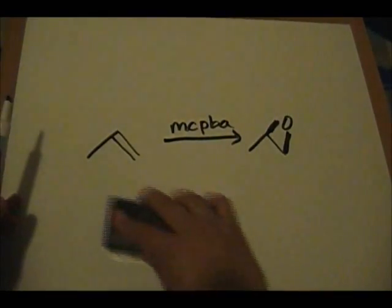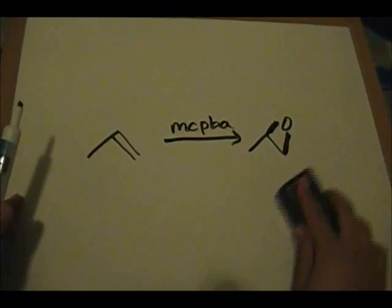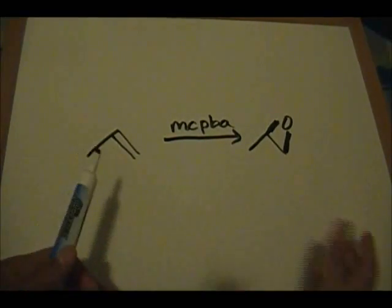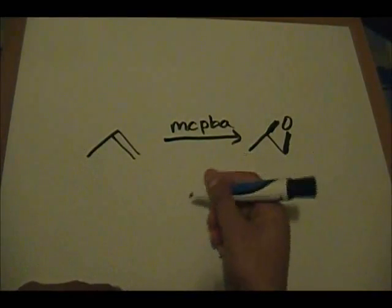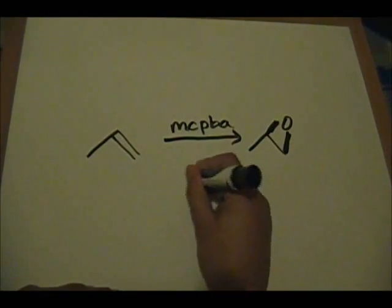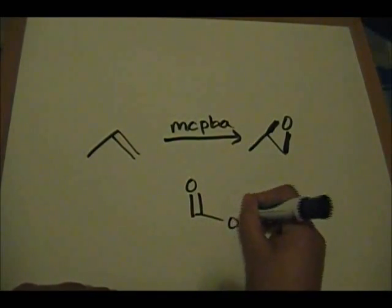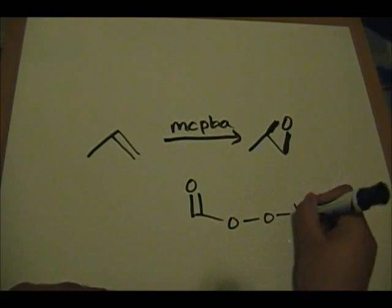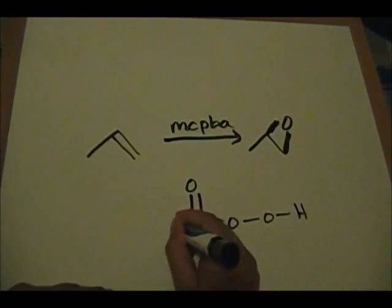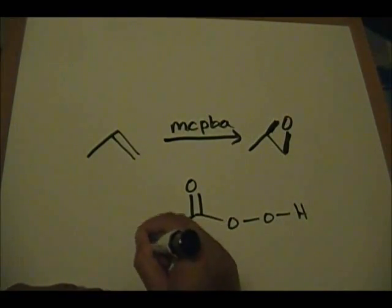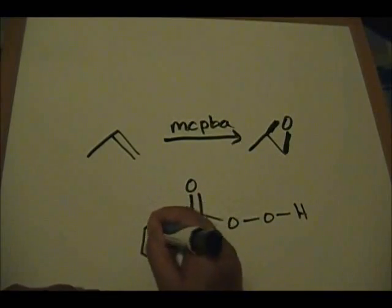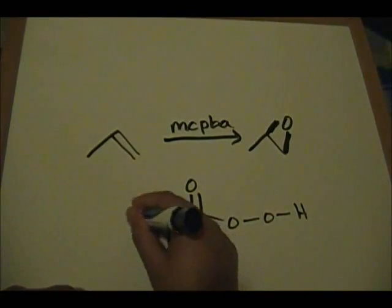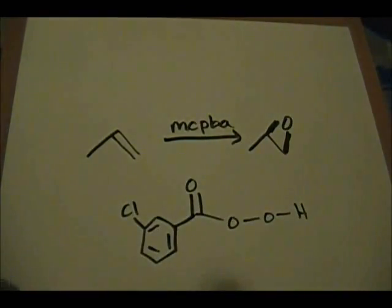So epoxide has a very specific meaning. So MCPBA, what is MCPBA? It's basically you have a carbonyl group here, and you have an oxygen, another oxygen, and an H here. You have an aromatic ring here and a chlorine there. So that's your MCPBA.